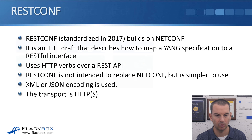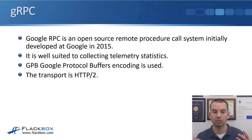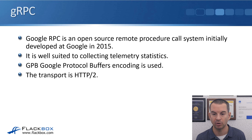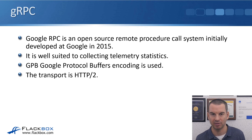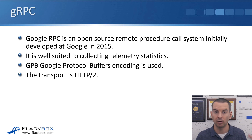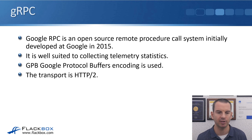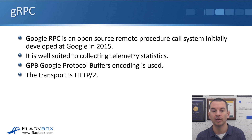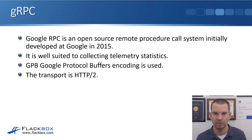We've also got gRPC — Google RPC — an open-source remote procedure call system initially developed at Google in 2015. It's well-suited to collecting telemetry statistics. So if you're in an Internet of Things environment with a lot of devices and you want to collect a lot of telemetry information, gRPC can be a good choice. GPB — Google Protocol Buffers — encoding is used rather than XML or JSON, and the transport is HTTP/2. For interacting with network devices, it will most likely be NetConf or RESTConf, but gRPC is also available.